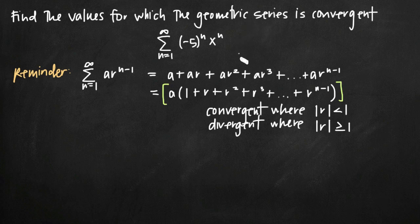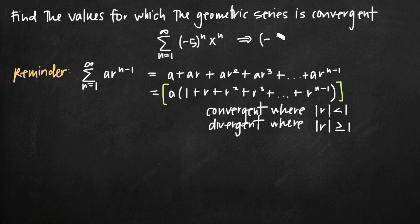The first thing we want to recognize is that in this particular series, we have two values raised to the same exponent. When that's the case, we can combine the bases and raise them both to the n power. So this series becomes negative 5x all raised to the n power, which simplifies things a bit.